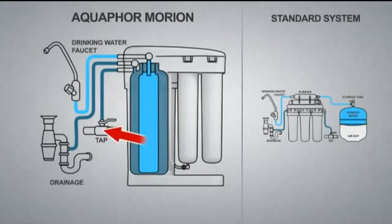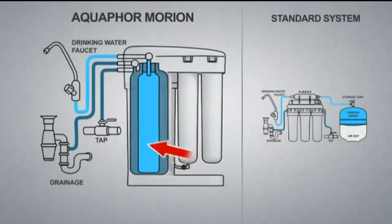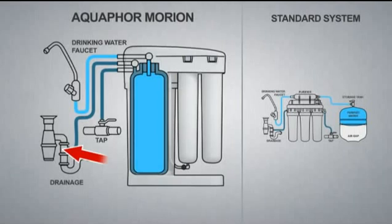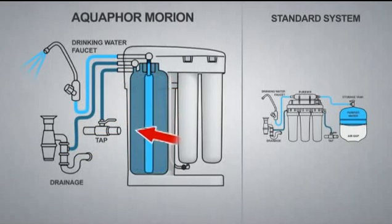During filtration, the purified water fills the storage section while the rejected water is forced out into the drain. When you turn on the faucet, the tap water starts flowing into the control section and forces out the purified water.